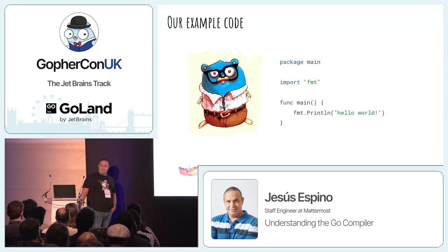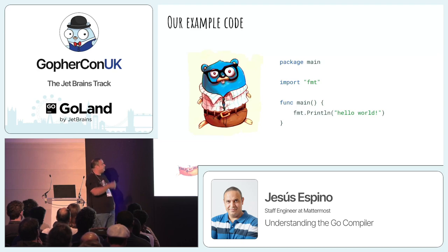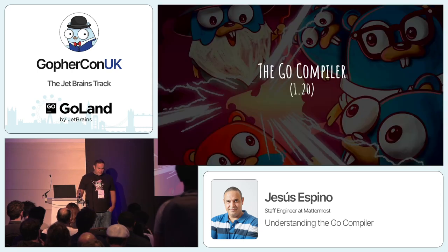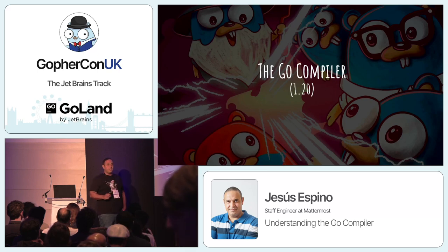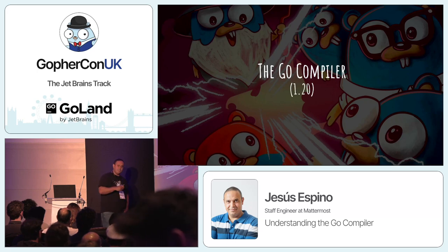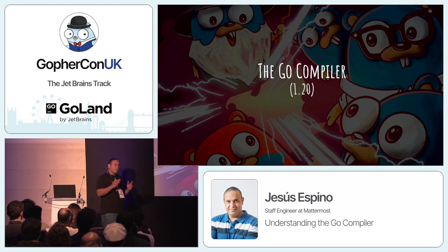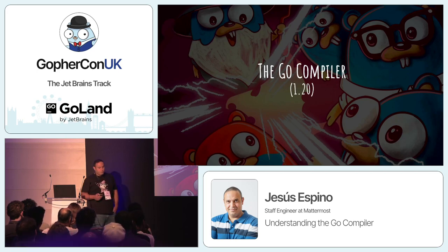This nice gopher is going to represent our Hello World example, which will be with us during the whole talk. I'm going to talk about the Go compiler version 1.20. I didn't make it for 1.21 because there are some changes in how a certain part of the transformation inside the compiler is done, and I wasn't able to update that on time for the talk.